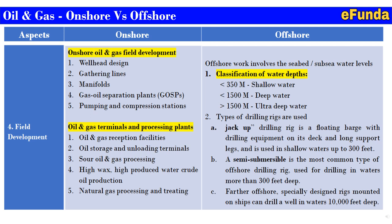For offshore, the work involves the seabed and subsea water level. Classification of water depth: less than 350 meters is shallow water; less than 1500 meters is deep water; greater than 1500 meters is ultra-deep water. Types of drilling rigs used: a jackup is a floating barge with drilling equipment on its deck and long support legs, used in shallow water up to 300 feet. A semi-submersible is the most common type of offshore drilling rig, used for drilling in water more than 300 feet deep. Further offshore, specially designed rigs mounted on a ship can drill a well in water up to 10,000 feet deep.